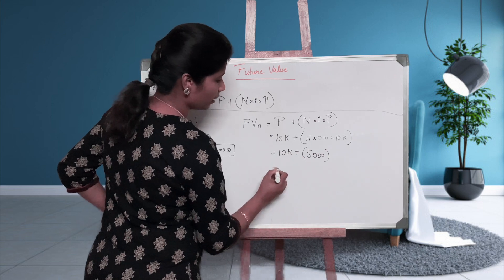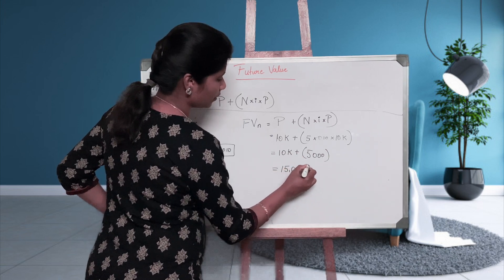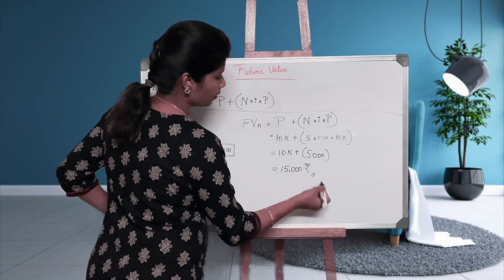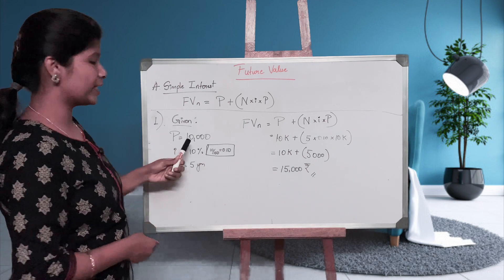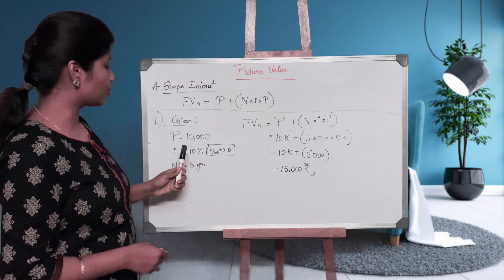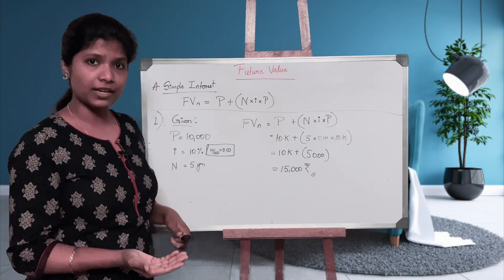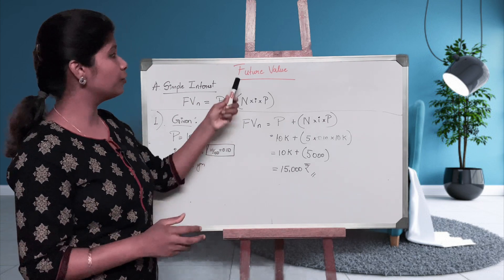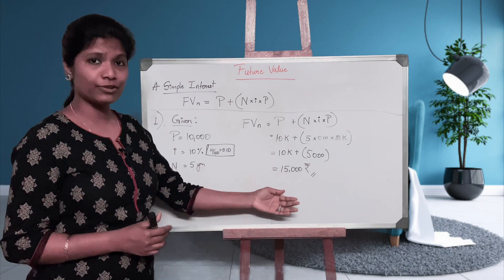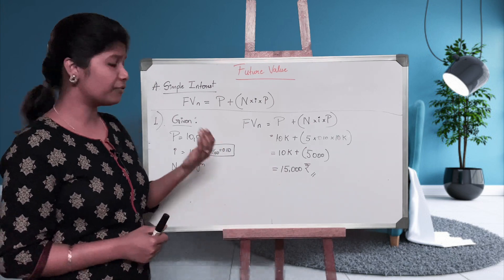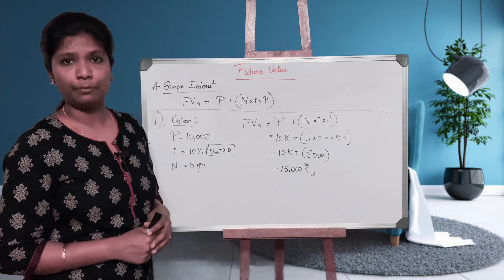So the answer is 15,000. Today, if you invest 10,000 at a rate of interest of 10% for 5 years, after 5 years your total amount or future value is rupees 15,000. So 15,000 is the future value of the present 10,000. This is the first basic problem.